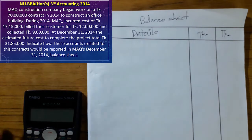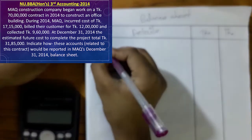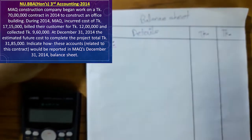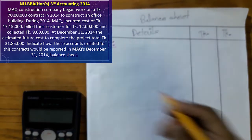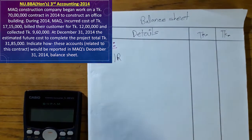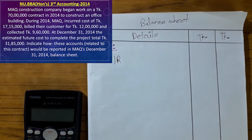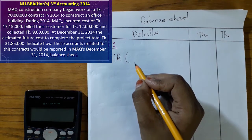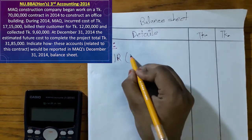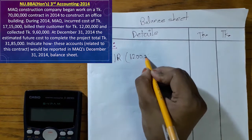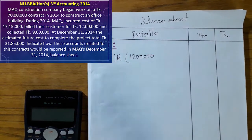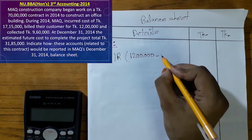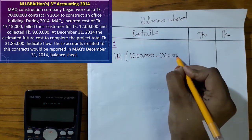Balance sheet — current assets: current assets, accounts receivable. We will record the bill given to our customer. We have the billed amount and cash collection.